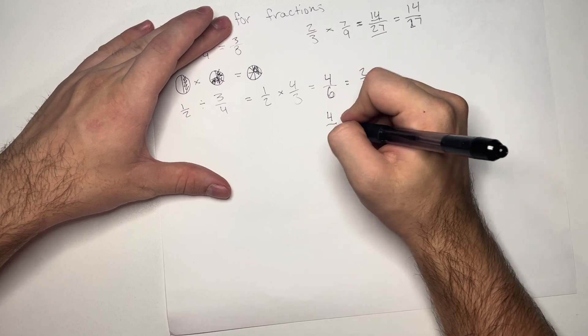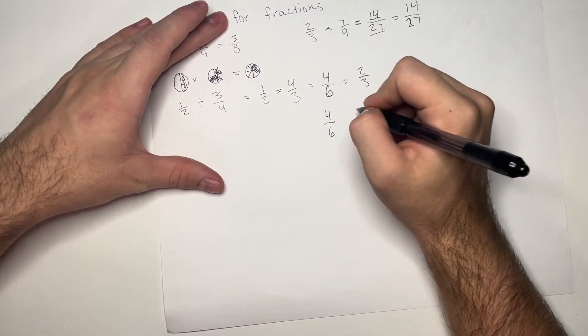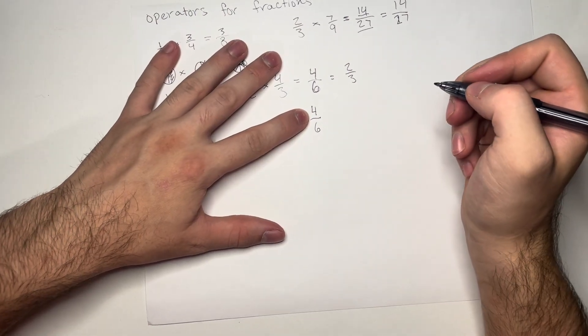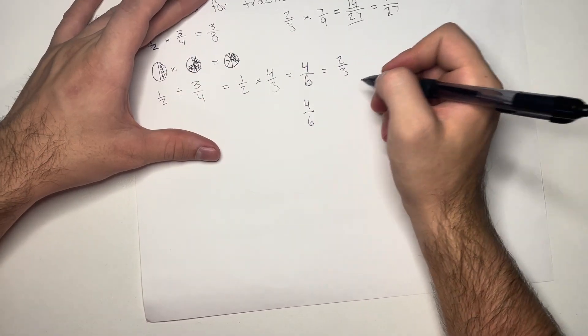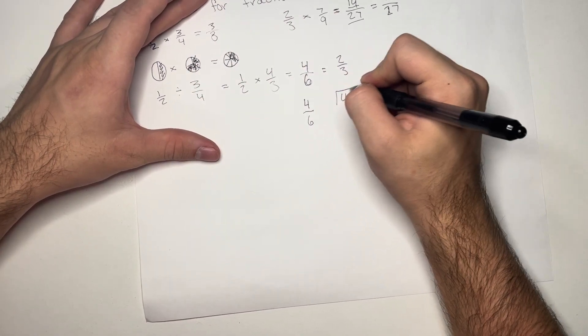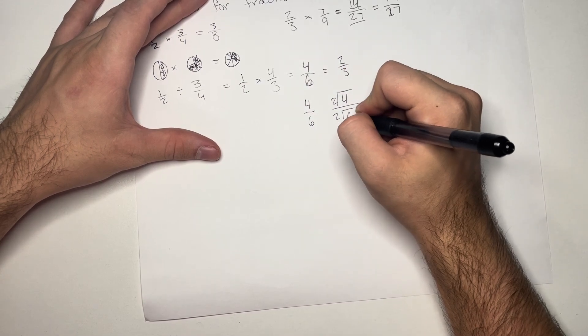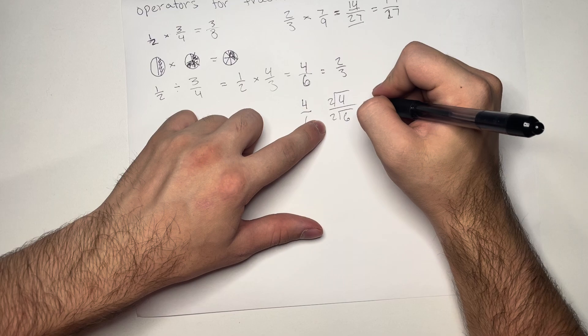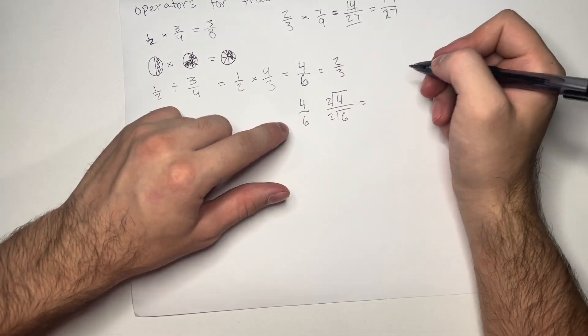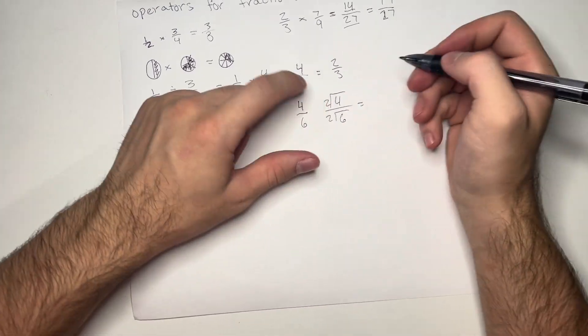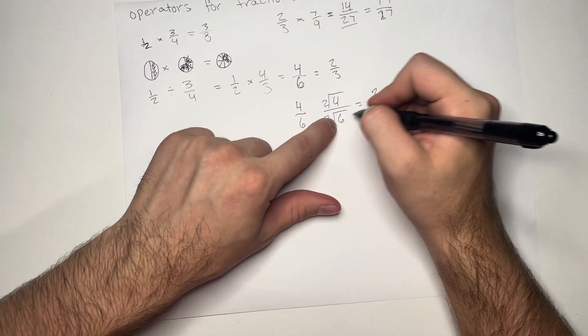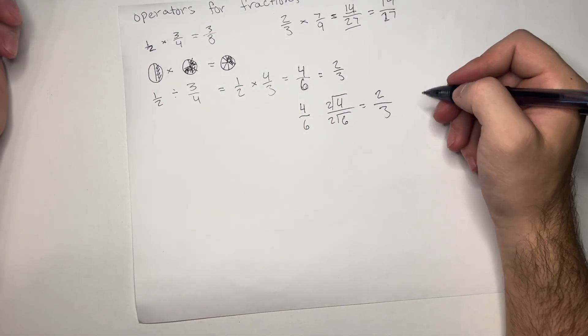Let's go ahead and show that slightly in a better way. So, we are going to take 4 and divide it by 2 over 6 divided by 2. And now, 2 goes into 4 twice. And 2 goes into 6 three times. And that's how we get 2 thirds.